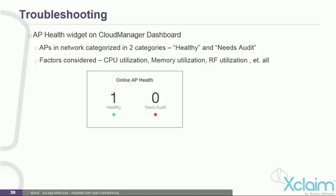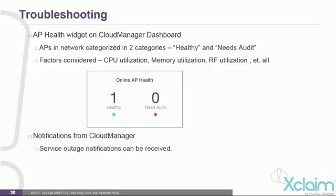Another method of troubleshooting is using the access point health widget on the Cloud Manager dashboard. Access points are categorized into two categories: healthy or needs audit. A proprietary algorithm runs on the access point, including factors such as CPU utilization, memory utilization, and RF utilization, to determine overall health. For example, if you have 10 APs all registered as good, you would have a metric of 10 healthy APs and 0 needing audit. You can also receive notifications from Cloud Manager, such as service outage notifications. There is also the Xclaim support forum.